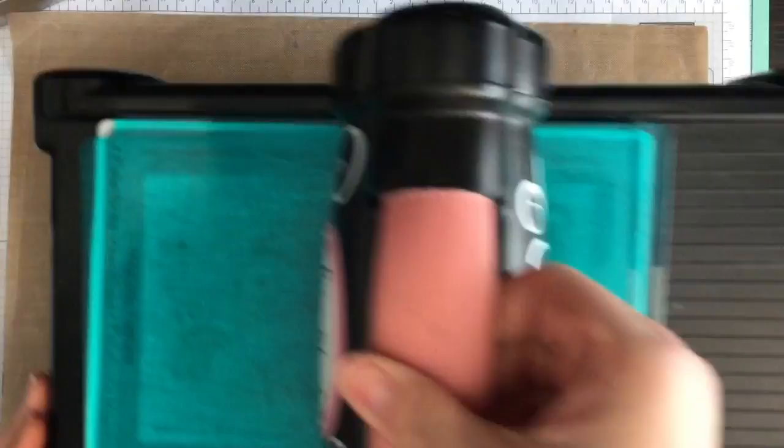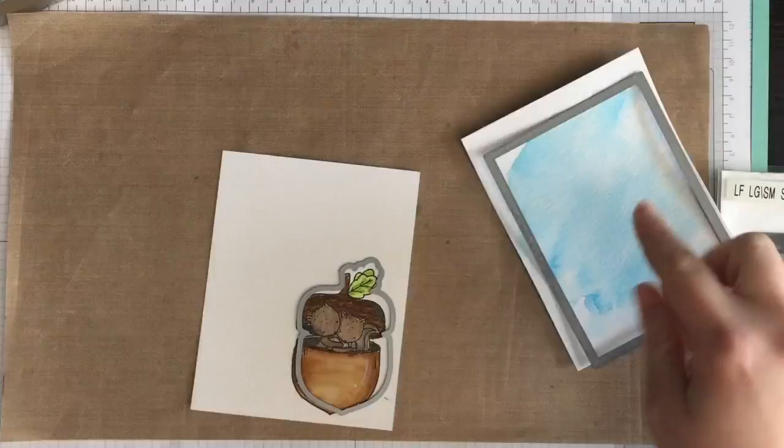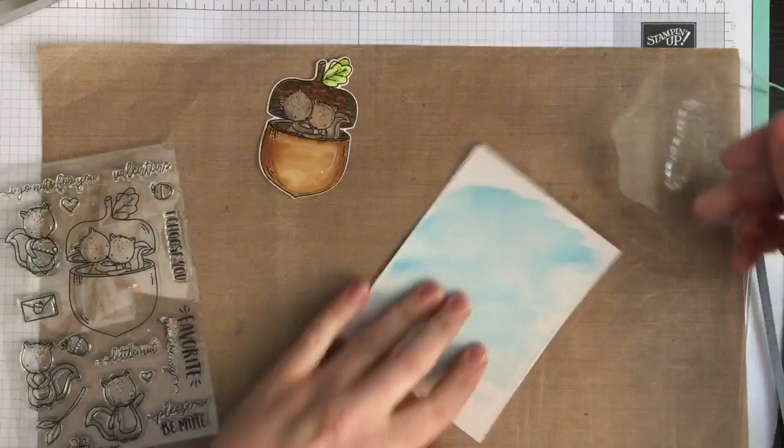And that completes the painting portion. So I'm going to finish up my card by cutting out the watercolored panel with a Lawn Fawn stitch rectangle and the coordinating dies for the squirrel image.